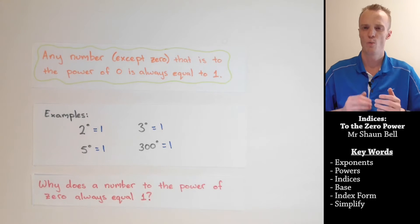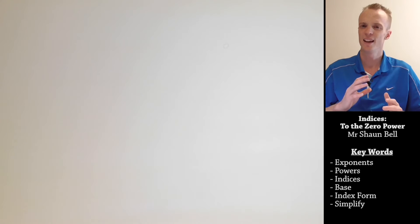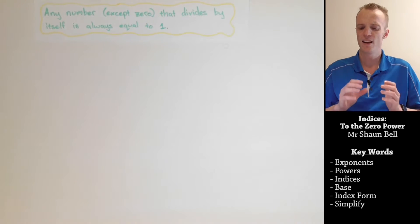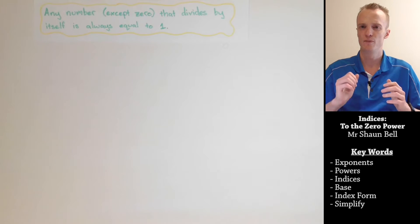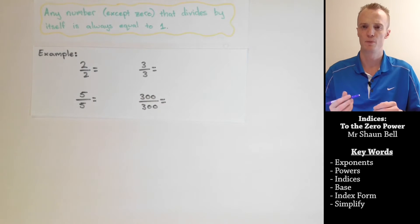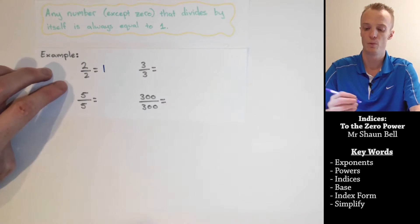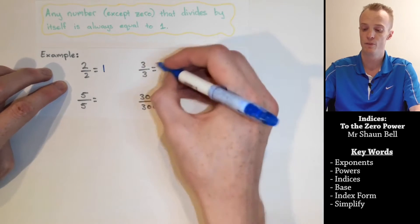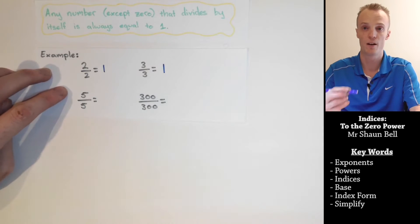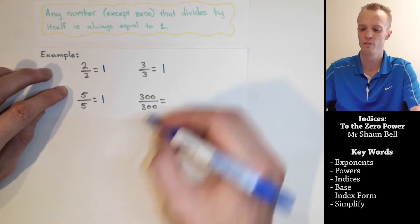But this certainly raises a question: why does a number to the power of zero always equal one? To answer that, we need to revisit a couple of things we already know. The first rule is that any number except for zero that divides by itself is always equal to one. So two divided by two equals one, three divided by itself equals one, five divided by itself equals one, and three hundred divided by itself equals one.